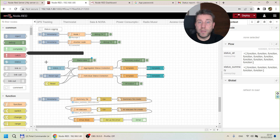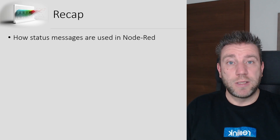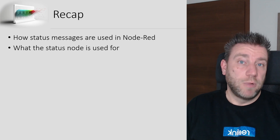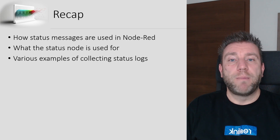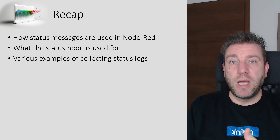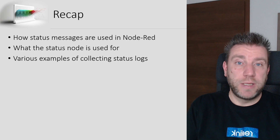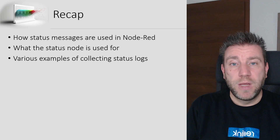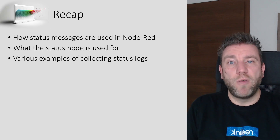That is the summary of this flow and the whole concept in a nutshell. As usual, if you're interested in the code, you'll find the download link in the video description. To recap: we talked about how status messages are used in Node-RED and how we can collect this information using the status node, how to process it, and how to store it in files or send it via email. Thanks for watching and hopefully see you in the next video.